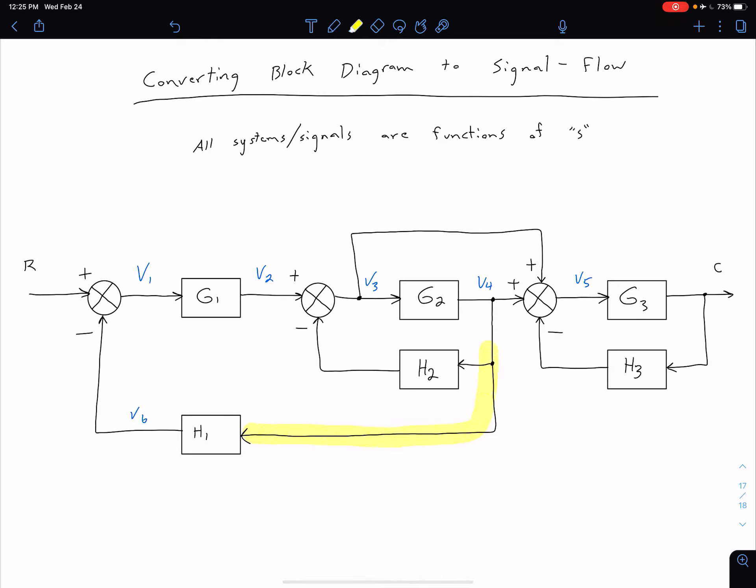On the other side of our H2, we can call this V7. And finally, on the other side of our H3, we can call this signal V8. So that's our first step: we want to identify these signals.